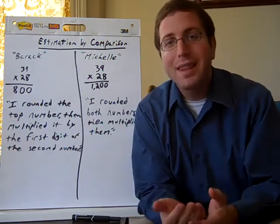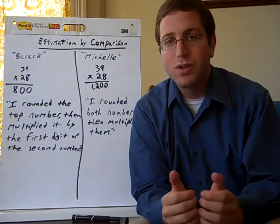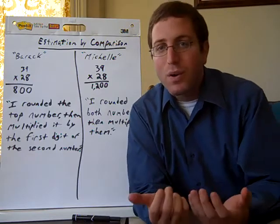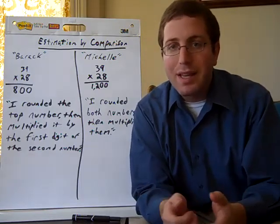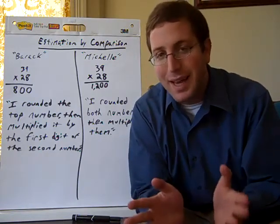And also in math, students have a lot of trouble figuring out if answers are reasonable. When you're asking them to multiply things like 40 times 5, and they end up with answers like 15,000, they can't realize that couldn't possibly be the answer.